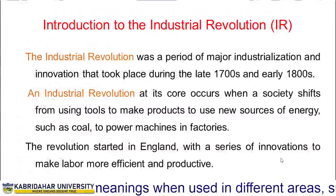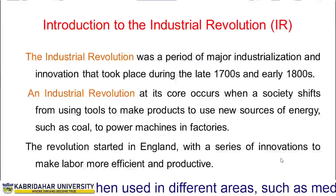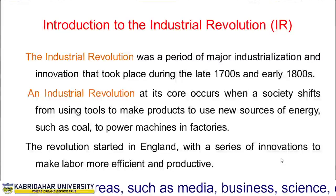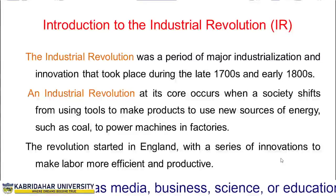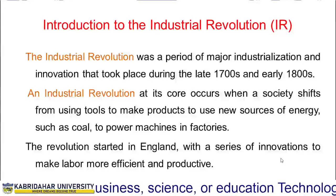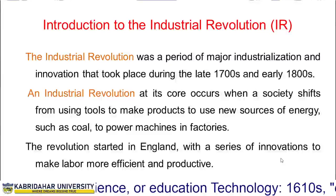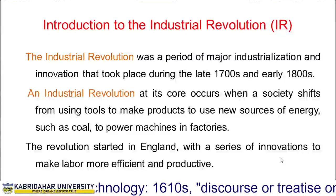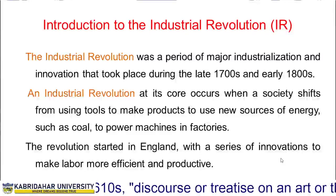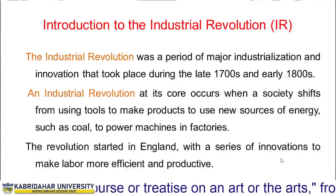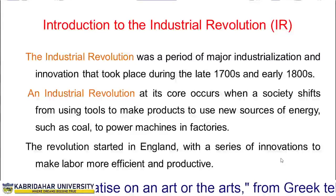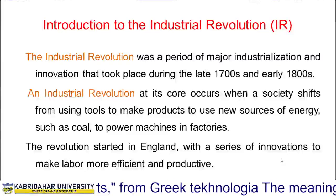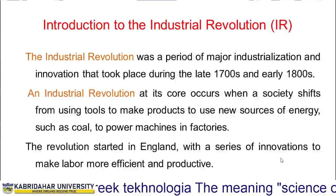Introduction to Industrial Revolution — this is the history part. Industrial Revolution was a period of major industrialization and innovations that took place during the late 1700s to early 1800s. At its core, an industrial revolution occurs when a society shifts from using tools to make products to using new sources of energy, such as coal, oils, and petroleum, to power machines in factories.